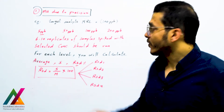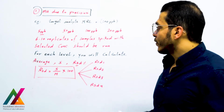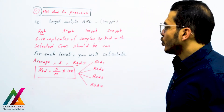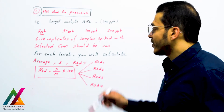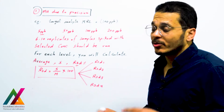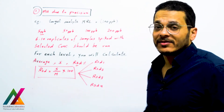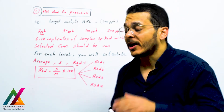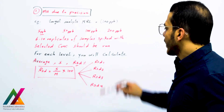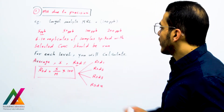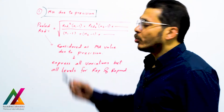Six to ten replicates of samples spiked with these selected concentrations are analyzed for each level. From these results, you calculate for each level the average, standard deviation, and relative standard deviation — which equals standard deviation divided by the average, multiplied by 100. Recovery for each individual result should be within the acceptable range according to the guideline you use. You will get a relative standard deviation for each level: RSD1 (low), RSD2 (mid), RSD3 (third level), and RSD4 (highest).